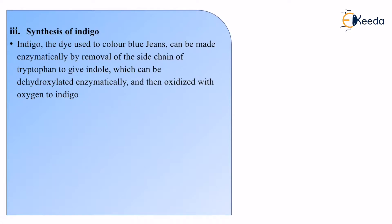Now how can we make indigo? One method is enzymatically — that means with the help of enzymes. With a good amount of enzymes, we take the feedstock, which is the raw material, as tryptophan, and we remove the side chains of it. Once we remove the side chains we get a compound known as indole. Indole is an intermediate component — a component which is still not indigo but from which making of indigo can be done easily. It can then be dehydroxylated enzymatically and oxidized with oxygen to give us indigo.